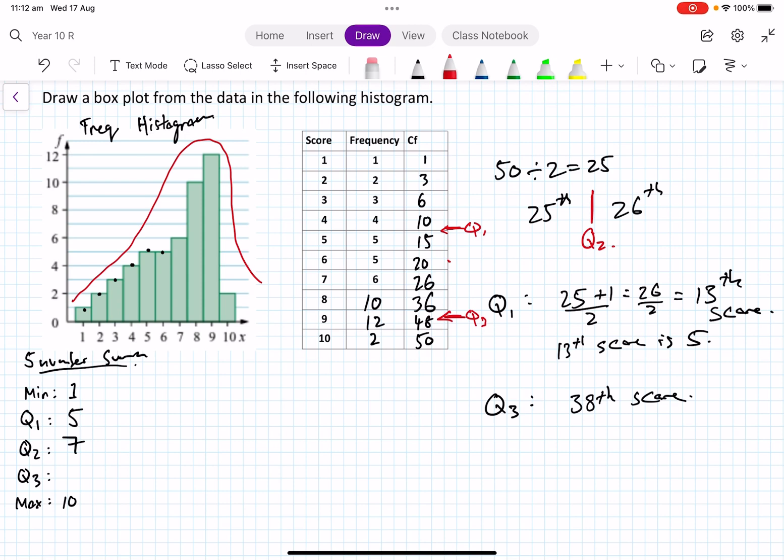All right, is 8. 27, 28, all the way up to 36th score. And then the 37th, 38th score is 9. So Q3 is 9, the 38th score.